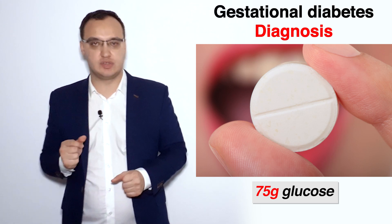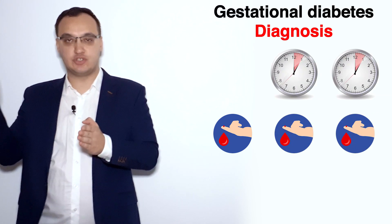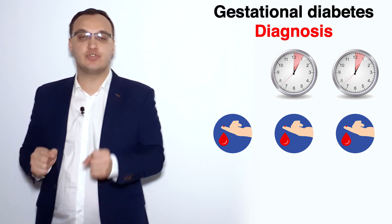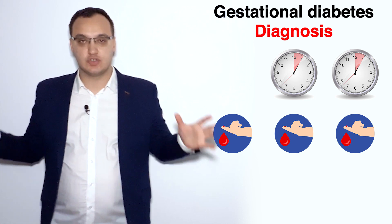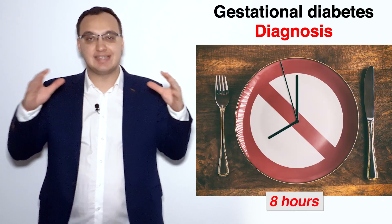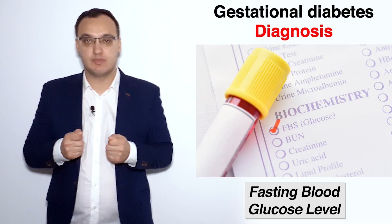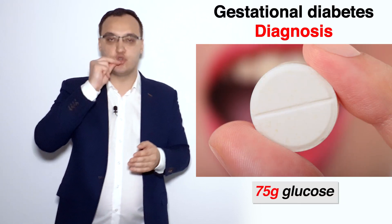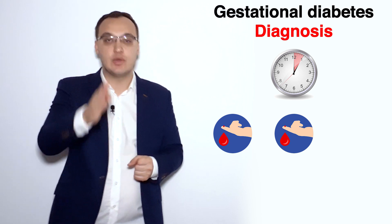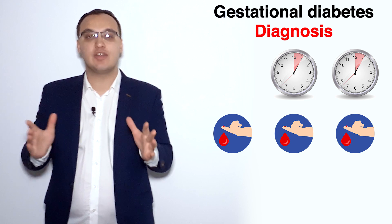We typically measure using the oral glucose tolerance test — we give 75 grams of glucose to the woman. The woman fasts for eight hours, comes in the morning, and we take a fasting blood glucose sample. We then give the 75-gram sugar tablet, wait one hour and measure blood glucose, then wait one more hour and measure again at the two-hour mark.